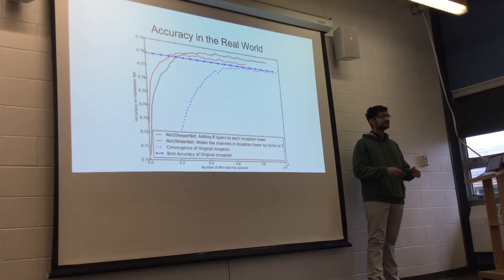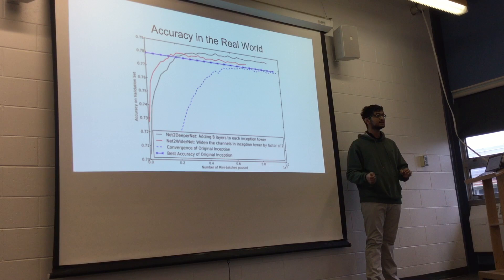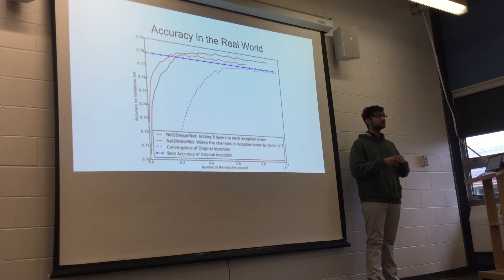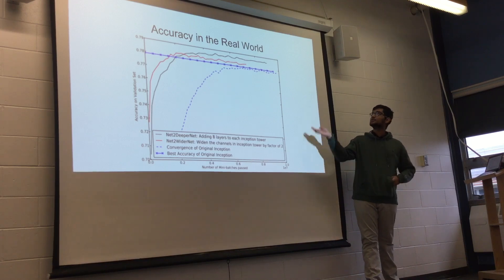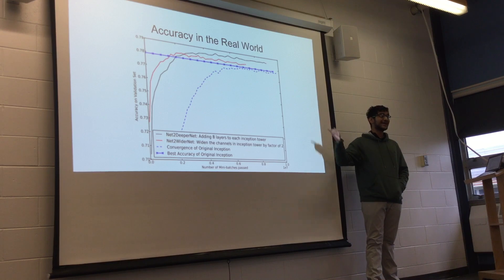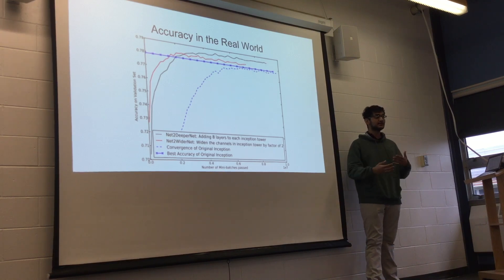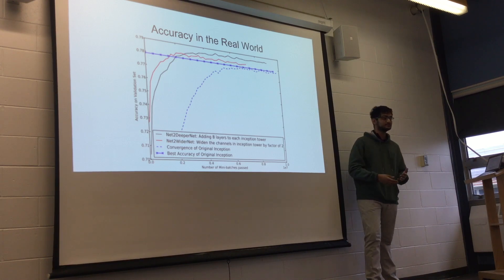It doesn't have the ability to pick up on small, minute details. By starting simple and then expanding, you're forcing it to only pick up on the big, important things — which is why you get higher accuracies in the real world and in testing. Because once you start overfitting, you get pushed into a trap where it focuses more and more on minute details.